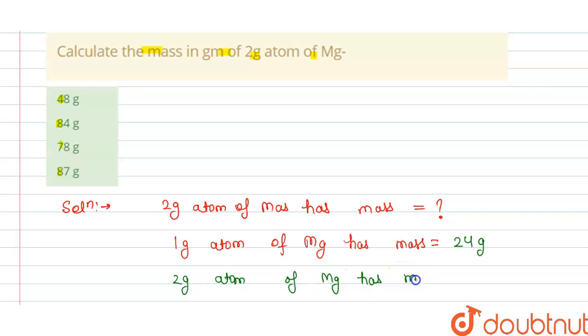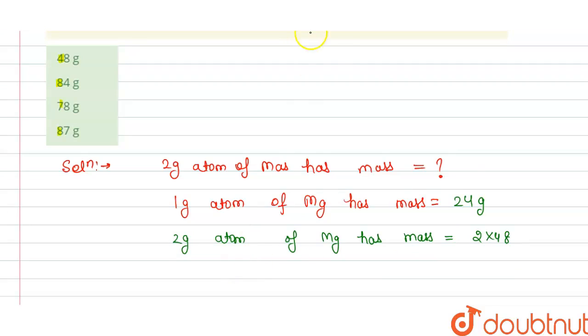Has mass equals to 2 multiplied by 24, so this is 48. From this we can say that 2 gram atom of magnesium has mass...